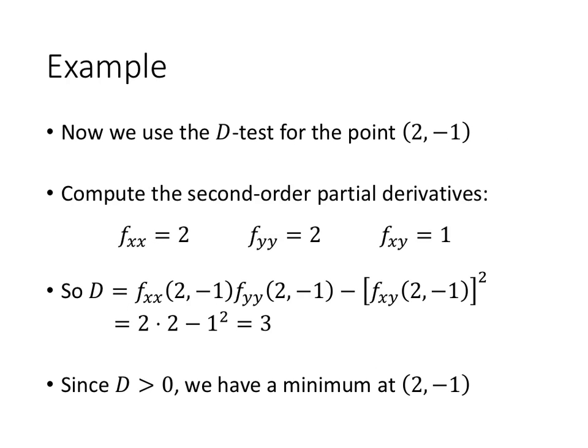Now we use the D-test for the point (2, -1). We compute the second-order partial derivatives: f_xx equals 2, f_yy equals 2, and f_xy equals 1. So D equals f_xx times f_yy minus f_xy squared, which is 2 times 2 minus 1 squared equals 3.